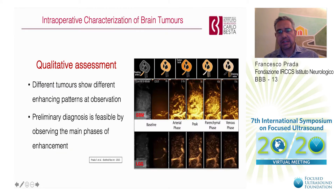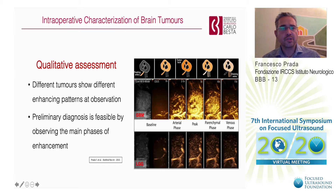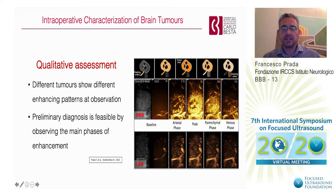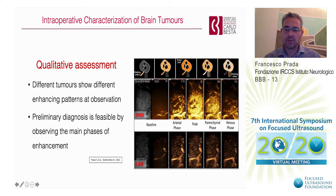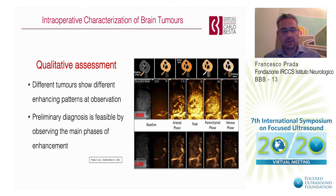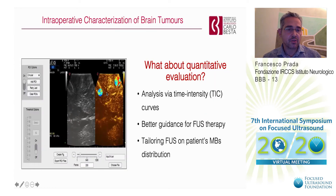We decided to start the study relying on a qualitative observation that we made in our more than 600 procedures in humans, where we observed clearly that different structures and different lesions have different amounts of microbubble over time. It is straightforward to understand how a glioblastoma has a higher number of microbubbles compared to a low-grade glioma. The same is true for different anatomical structures, where you can see a difference between artery, gray matter, and white matter.